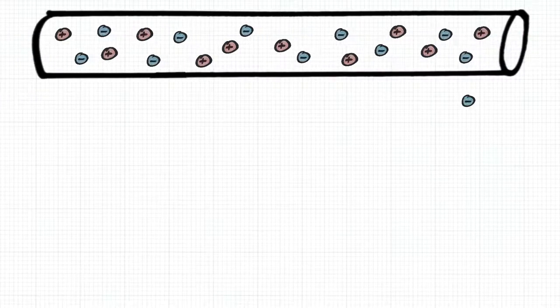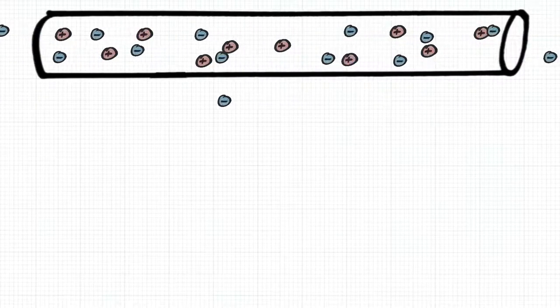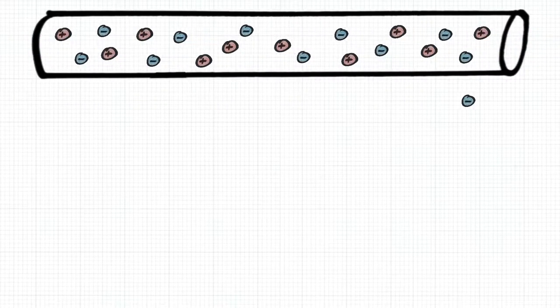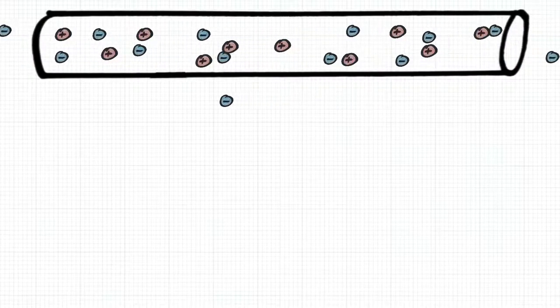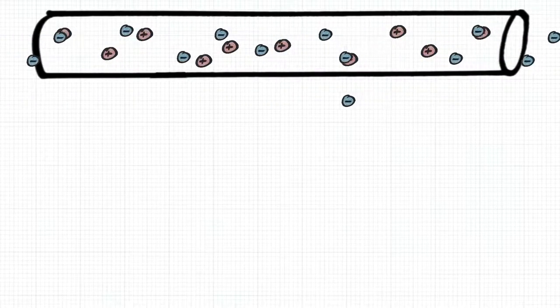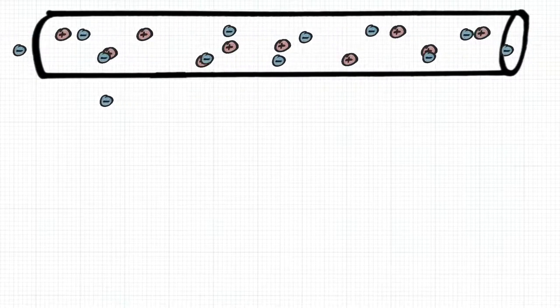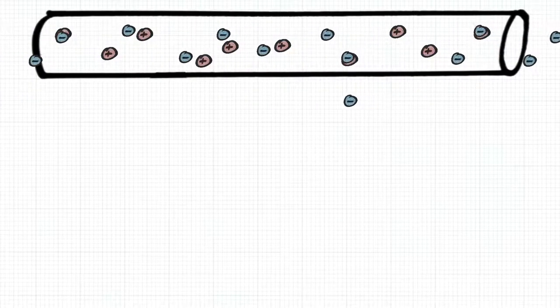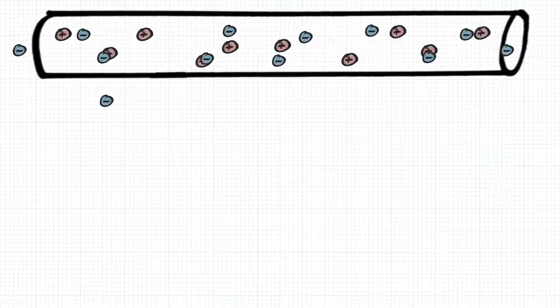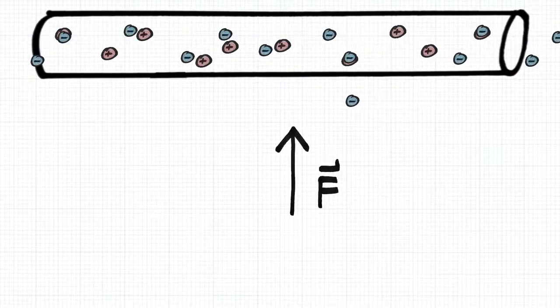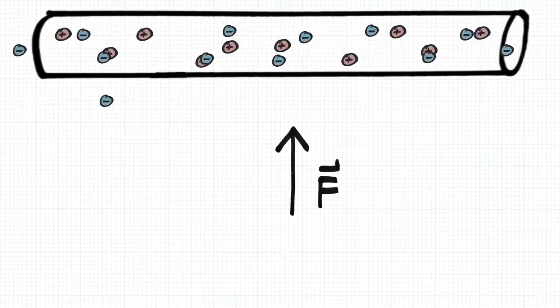So what now happens is that the current causes a magnetic field, and any charged particle which moves in a magnetic field is going to experience a force acting on it. And that force is perpendicular to both the velocity of the particle and the magnetic field. For this example, it points towards the conductor.